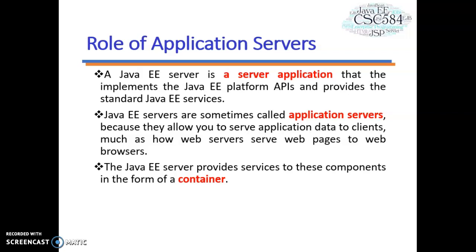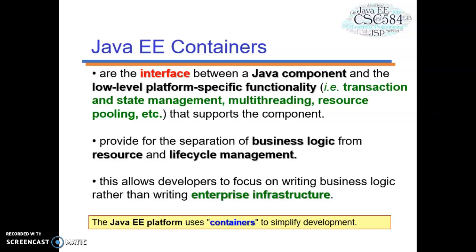Let's look at containers. Java EE containers are the interface between a Java component and low-level platform-specific functionality — for example, transaction and state management, multi-threading, and resource pooling that support the component. Containers provide for the separation of business logic from resource and lifecycle management. This allows developers to focus on writing the business logic rather than writing enterprise infrastructure. We use containers to simplify development.